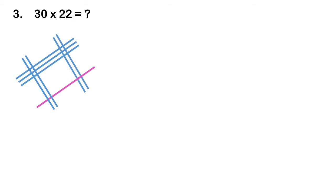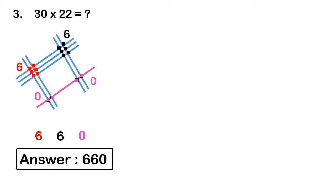Count the dots from left to right: the first group gives 6. The right side also gives 6. The next group appears to show 2 dots, but the correct count is 0, because those dots are formed by the connection of the pink zero line — dots formed by zero lines do not count as a value. So write 6, 6, 0. The exact answer is 660.